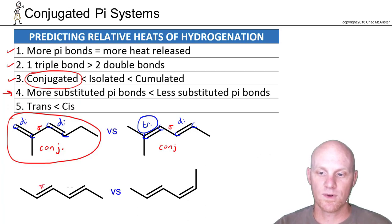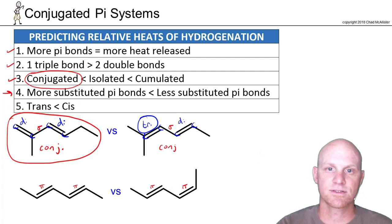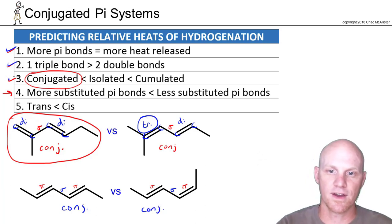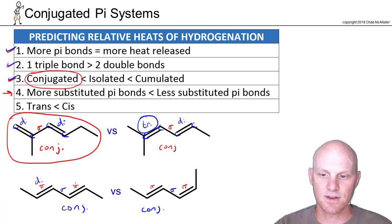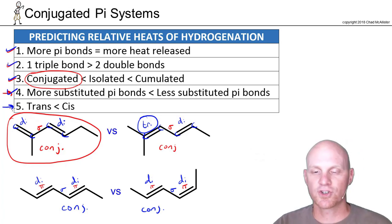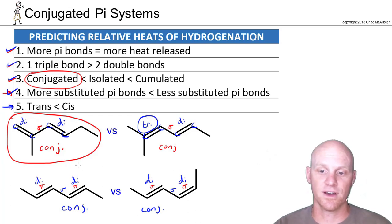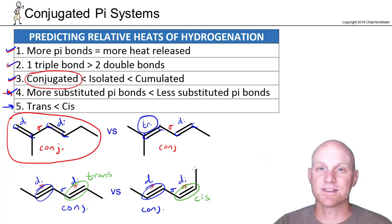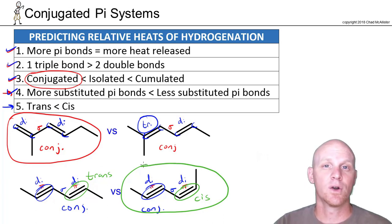In the next example, we've got the same number of pi bonds, no triple bonds, and both are conjugated systems with equal substitution — di-substituted throughout — so still no difference. Finally, we learned that trans double bonds are more stable than cis and therefore release less energy. One double bond is trans and the other is cis. Trans is more stable than cis, so trans starts out lower in energy and will be less exothermic. The cis double bond will have a higher heat of hydrogenation and release more heat when converted to the corresponding alkane.